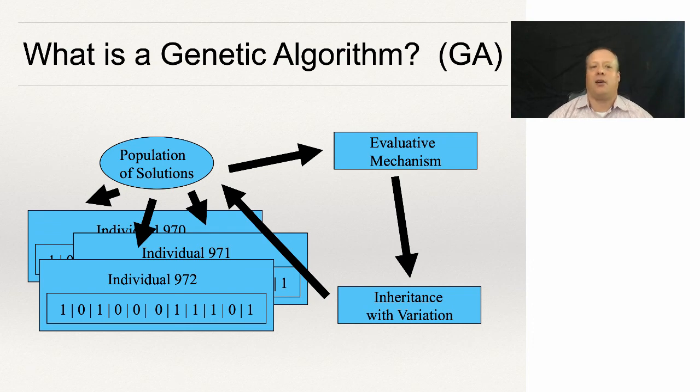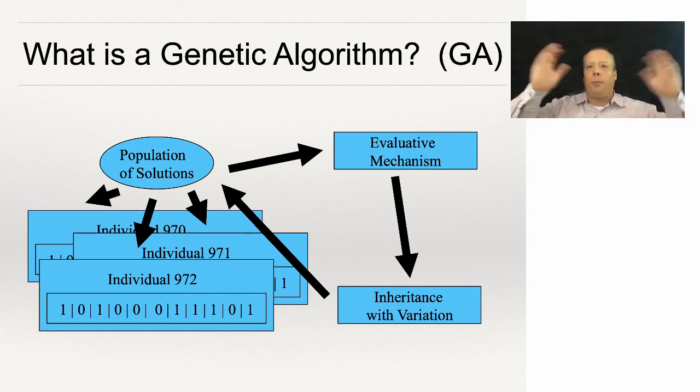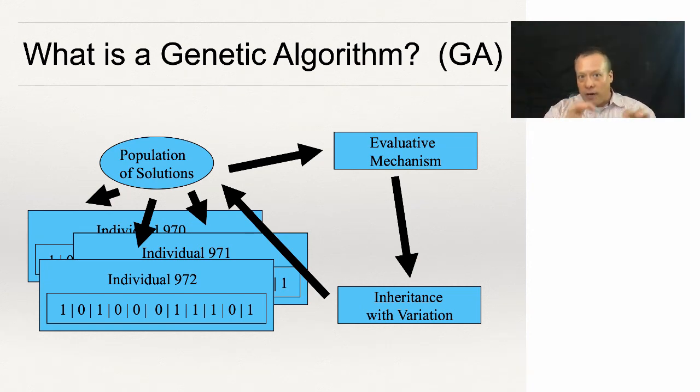So what is a genetic algorithm? A genetic algorithm is very simple. We're going to come up with a way to encode our problem such that we can generate a random string that solves the problem. Now it might not solve the problem very well, but it will solve the problem in some ways. So you can imagine, for instance, a regression problem where the string is the coefficients of the regressor line, right?